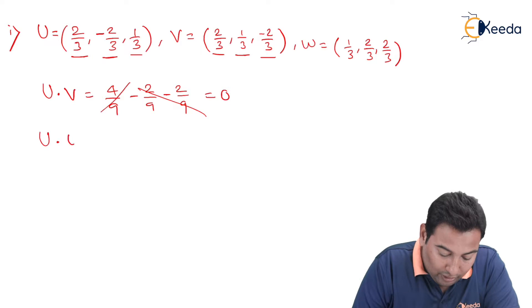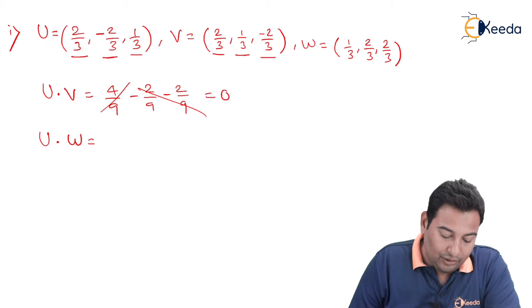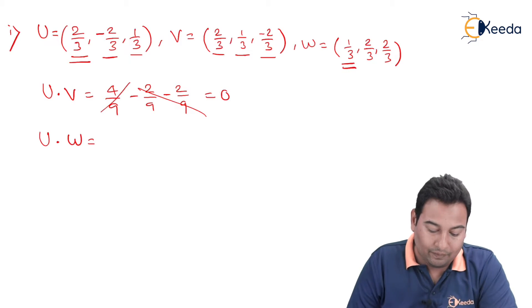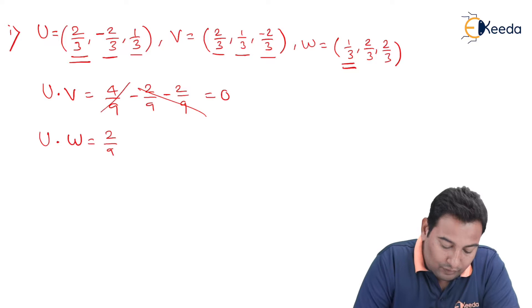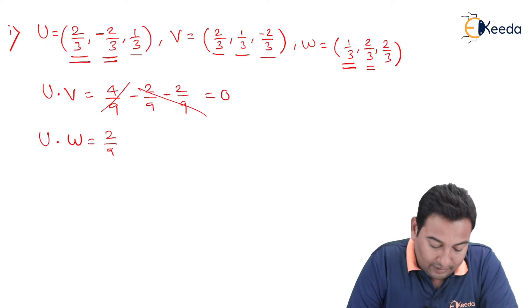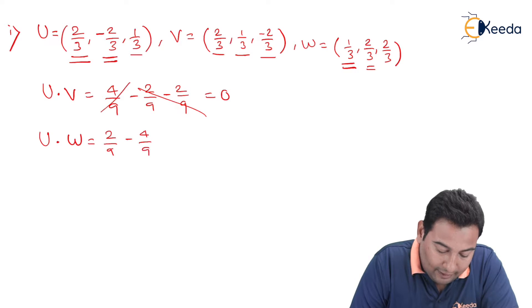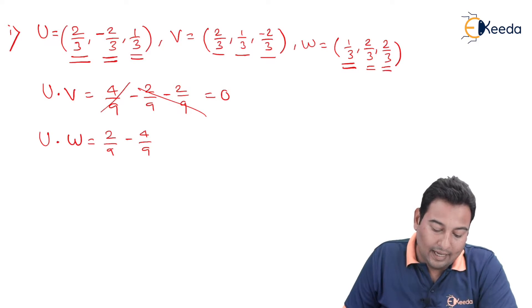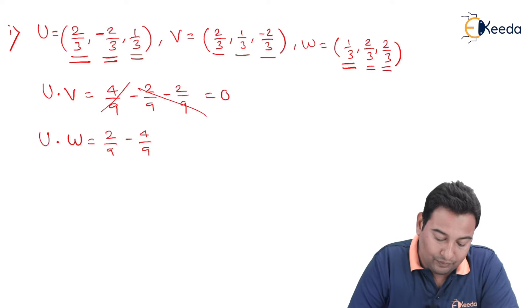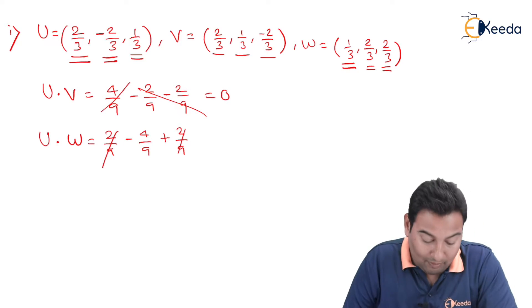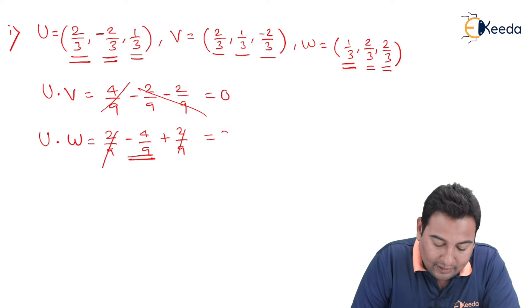Now we are going to check u dot w. 2/3 times 1/3 is 2/9; minus 2/3 times 2/3 gives −4/9; and 1/3 times 2/3 is 2/9. Simplifying: 2/9 and 2/9 become 4/9, which cancels with −4/9. The answer is 0.